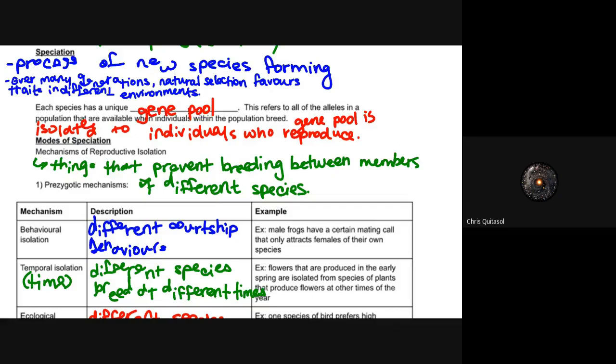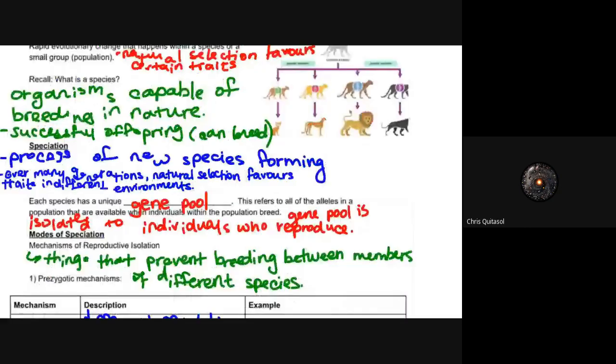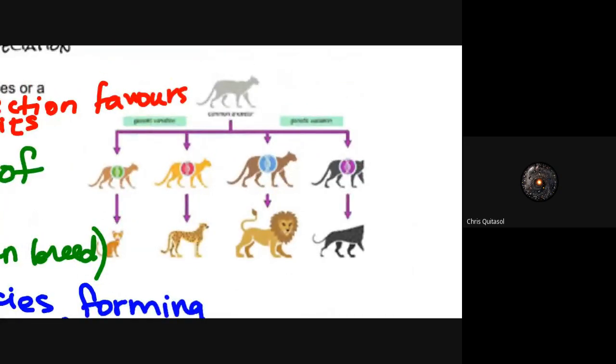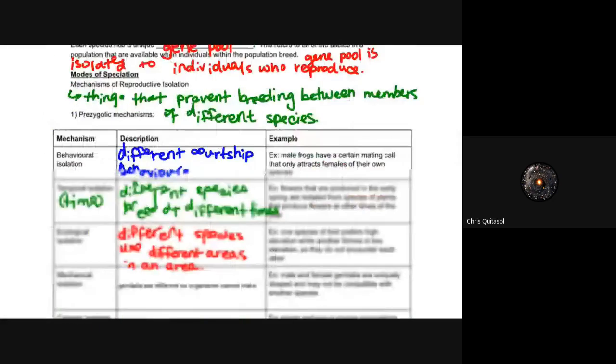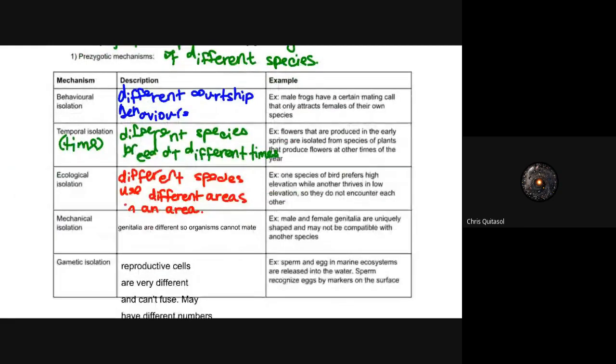When we look at speciation as a whole and considering the gene pool, you have to think about the modes with which species reproduce. We call that mechanisms of reproductive isolation, which prevents breeding between different members of different species. We'll talk about this diagram when we look at the precursor species to cheetahs, lions, jaguars. With the exception of a few, they're not able to reproduce amongst themselves.